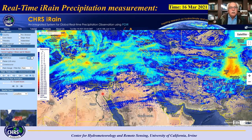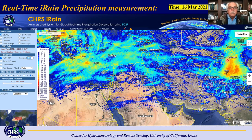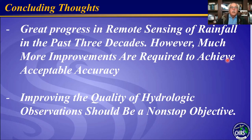In terms of capabilities, here is our real-time rainfall estimate as of this morning, downloaded on March 16. You will see a little bit of precipitation shown in our system over the Kingdom. Otherwise it's pretty dry compared to some neighboring countries, where you can see some patterns of rainfall. Every half hour, that information gets updated.